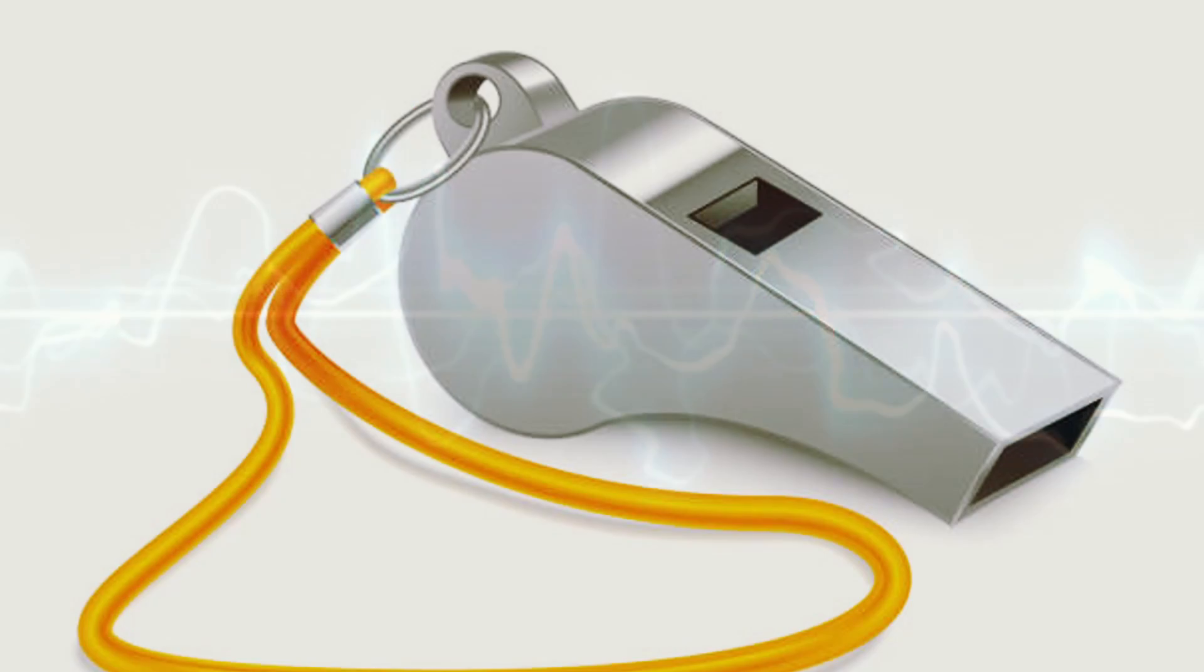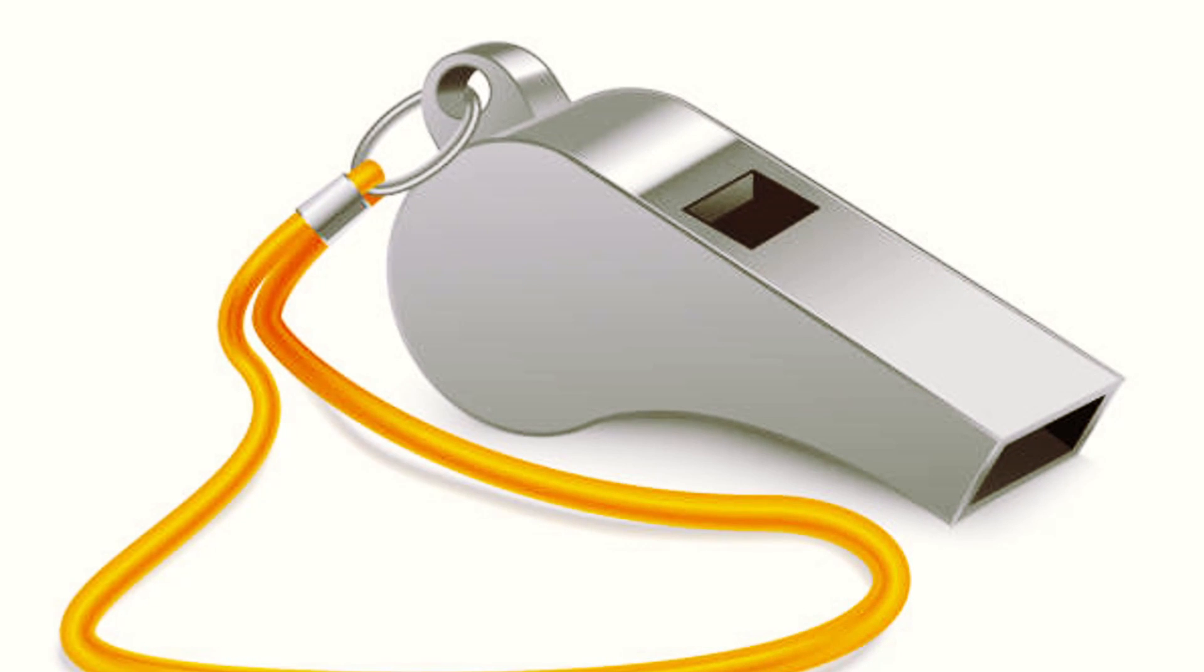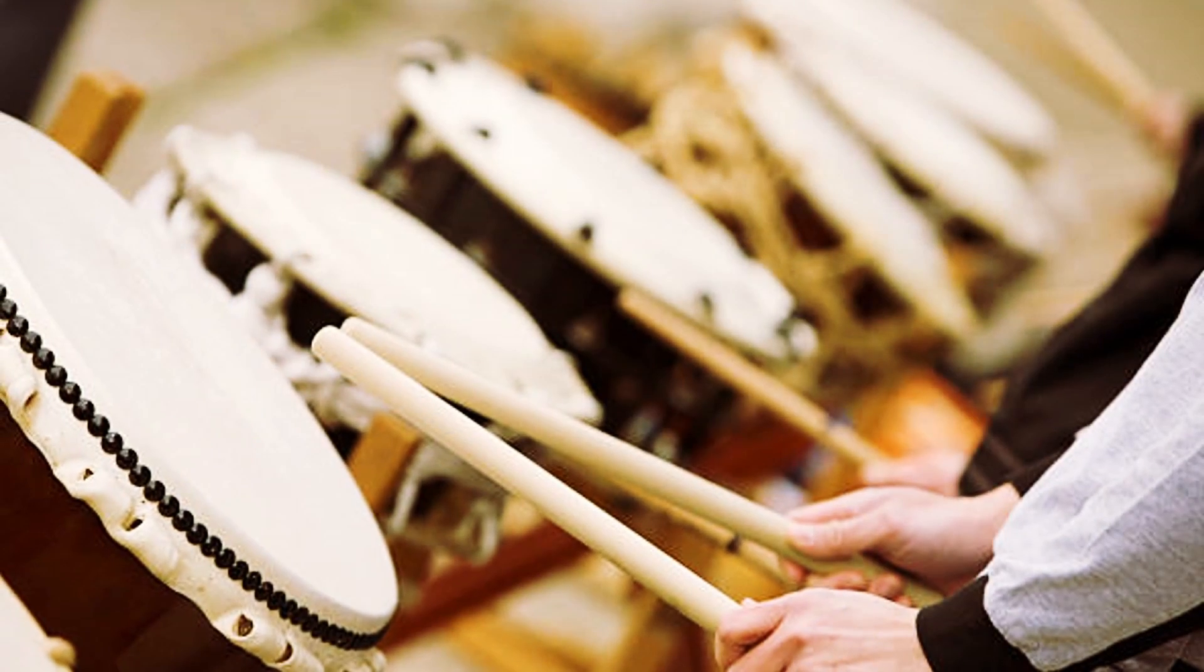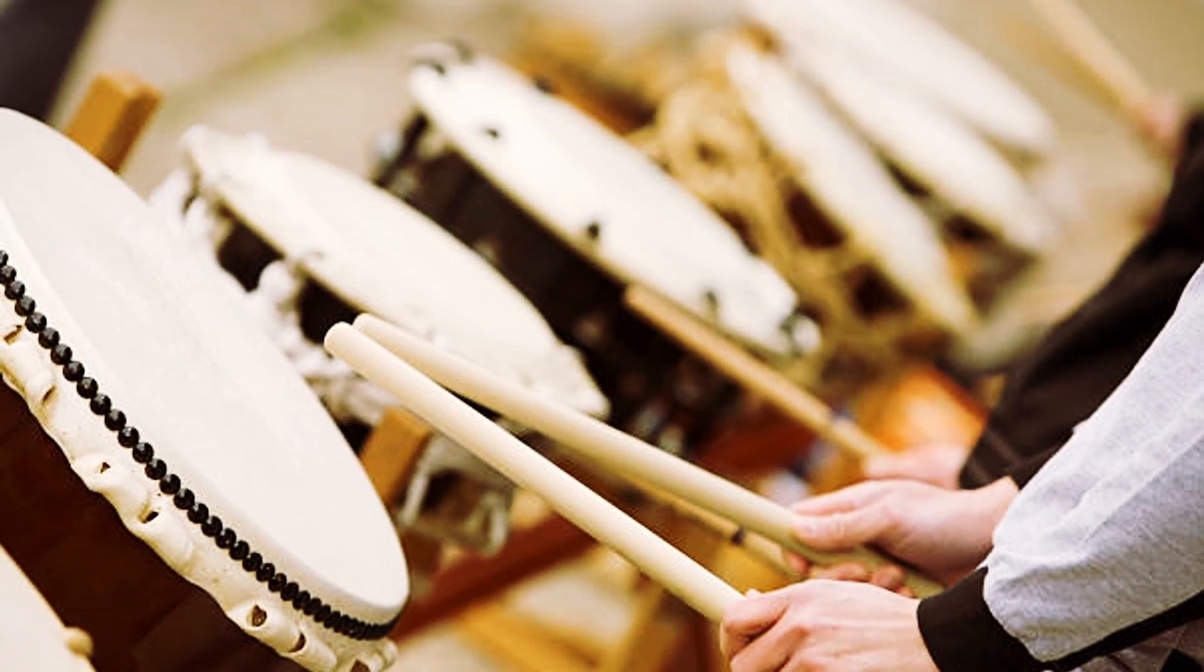For example, a high-pitched whistle has a higher frequency and sounds so sharp to the ears, while a low-pitched drum beat appears much duller to the ears.